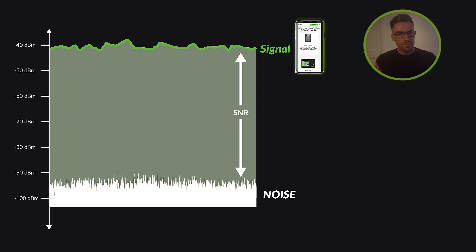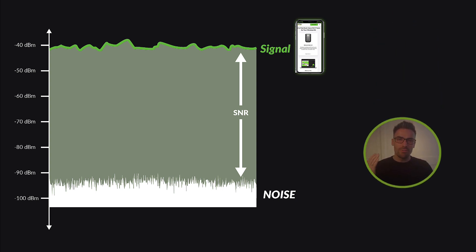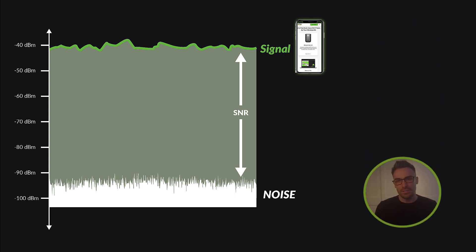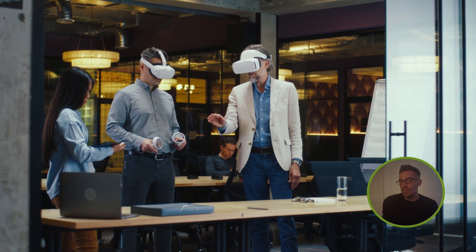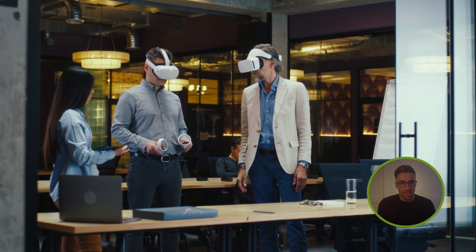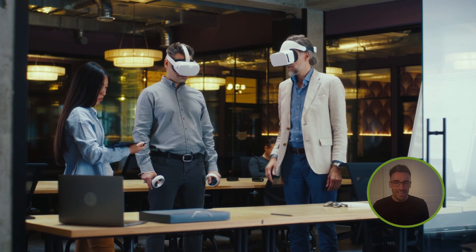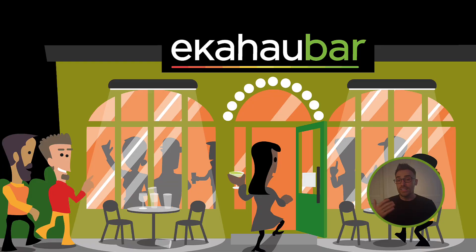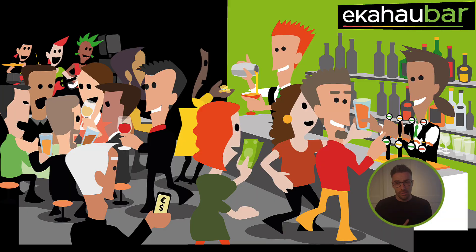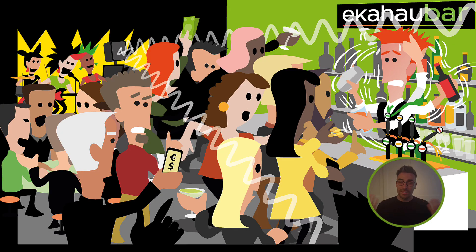SNR is basically the difference between the signal strength your device gets and the background noise it has to shout over to get its message across. So why do we care about SNR? Well, a good SNR means more reliable and faster wi-fi. It's like trying to have a conversation in a crowded bar — the more people and the higher the noise, the harder it is to hear.